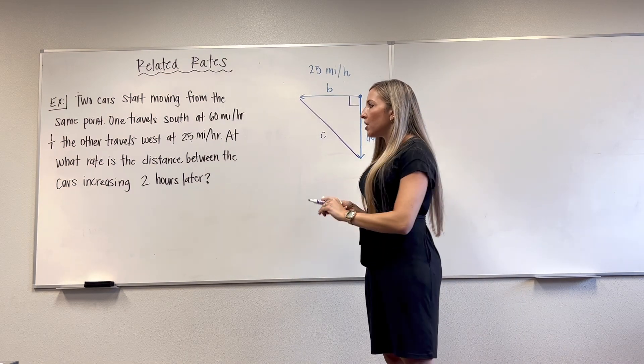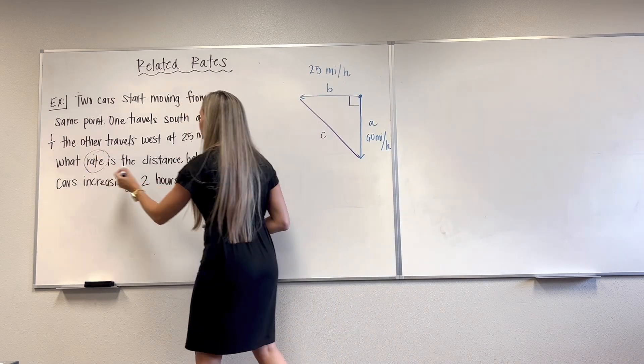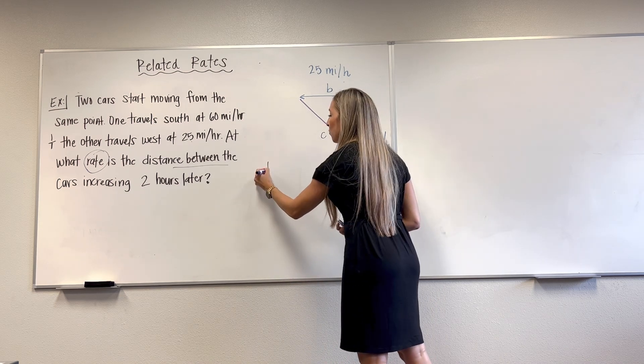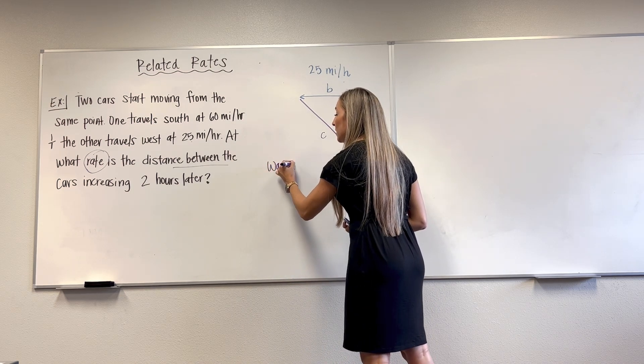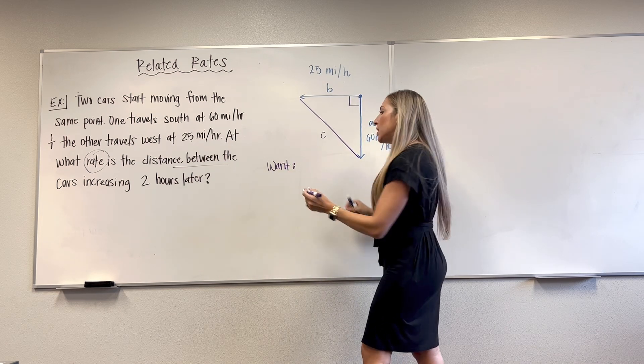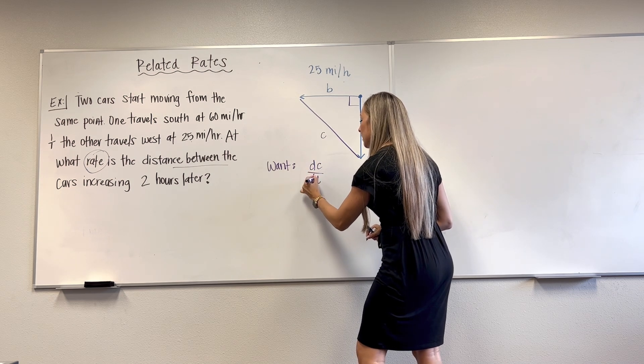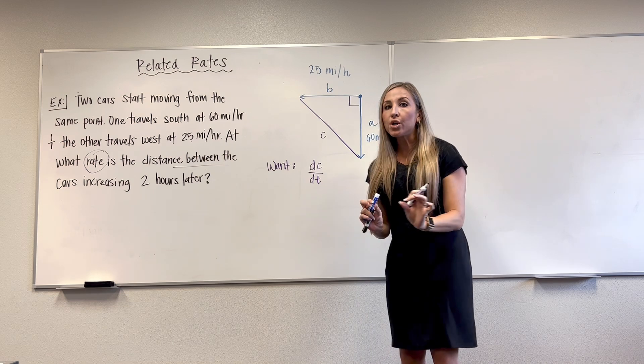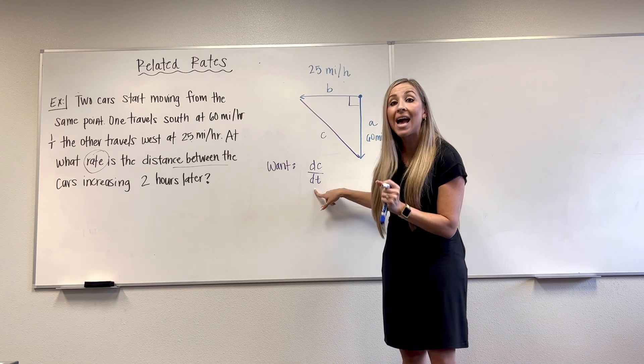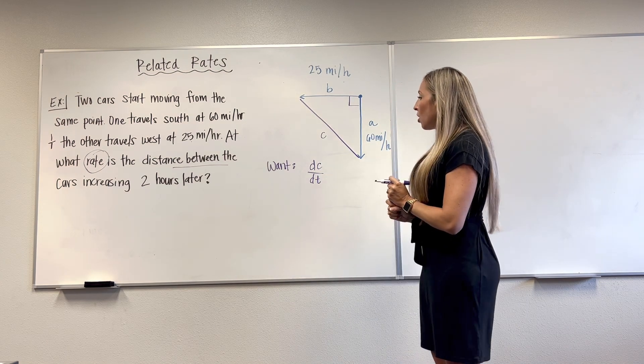Let's introduce some notation here. First, let's focus on the question. At what rate is the distance between the cars increasing? So what they want from us is the rate of change with respect to time of this distance. How do you write that? Using derivative notation. That would be dC/dt. All your related rates problems are going to involve derivatives with respect to time. That's why they're related rates.